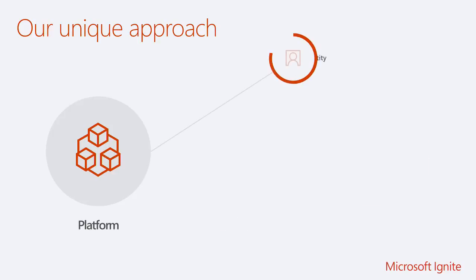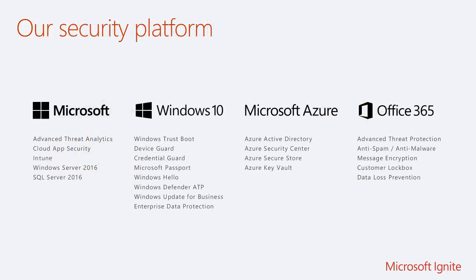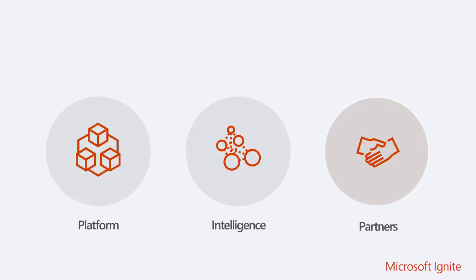Very quickly in terms of platform: we have identity in Azure AD, we have control of devices and being able to manage them, we have control of apps, data, and infrastructure. Here today we're looking at things on the Office 365 side - advanced threat protection, customer lockbox, and some of the other pieces. We'll go through what we're going to be doing.